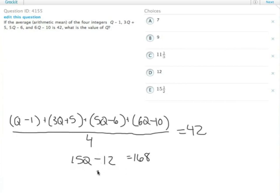So we have 15q minus 12 equals 168. Add 12 to both sides. We get 15q equals 180.